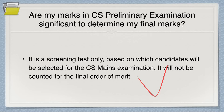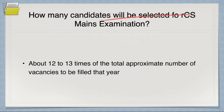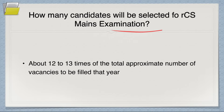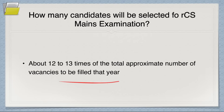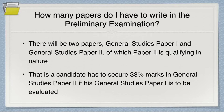How many candidates will be selected for the mains examination? About 12 to 13 times the total approximate number of vacancies. So if vacancies are 1,100, then 1,100 multiplied by 13 is roughly 14,000 to 15,000 — that is how candidates are selected for mains.